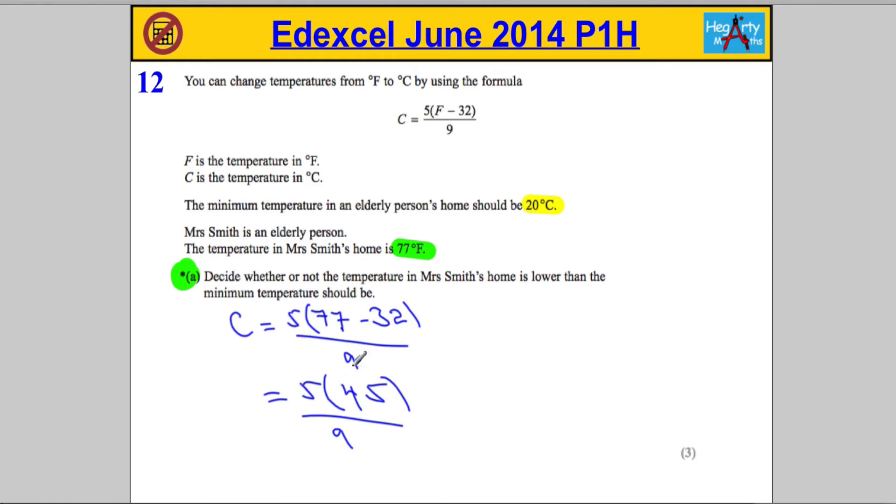Some people might try to work out 5 times 45, but actually there's a slightly quicker way to do it. We can cancel the 9 into the 45. It's going to go in 5 times, so 5 times 5 is 25. So the temperature in Mrs. Smith's home is actually 25 degrees Celsius.